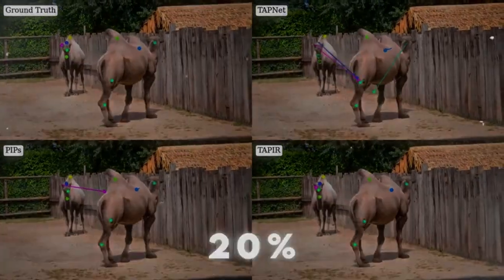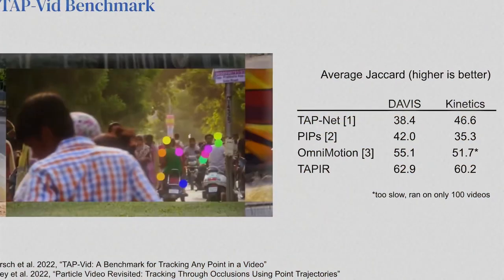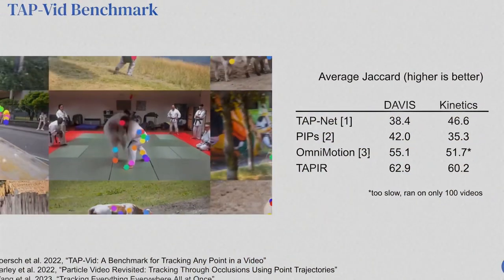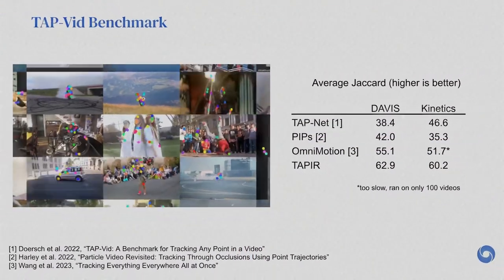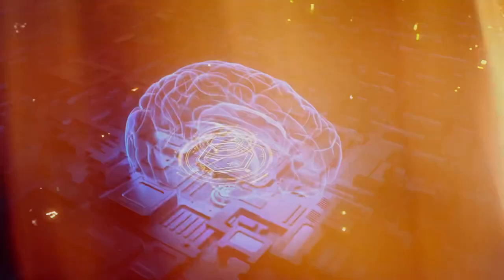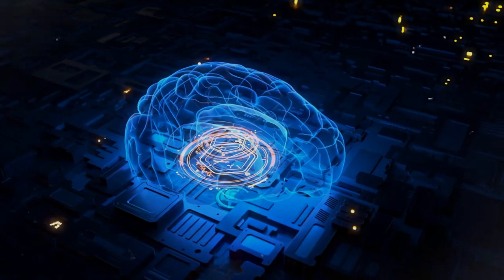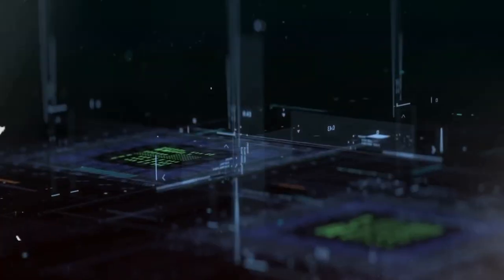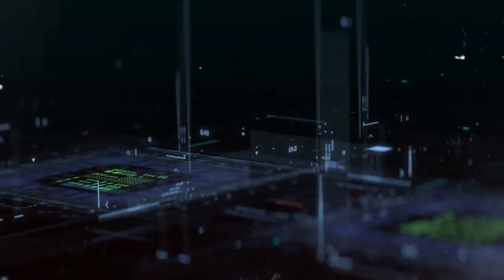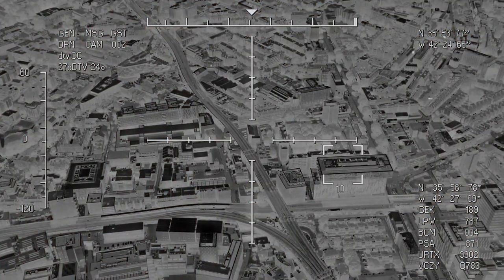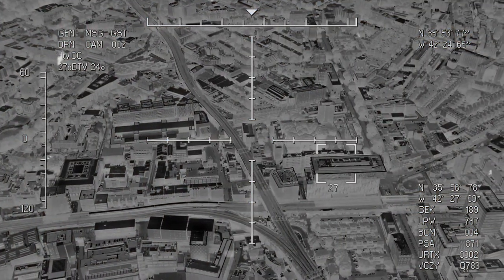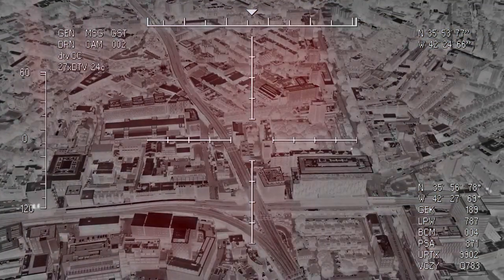TAPR showed an impressive 20% improvement in a metric called Average Jaccard, which measures how well it tracks objects in videos. The model is super efficient too — it can process lots of frames in a video all at once, making it really fast. It can even keep up with real-time videos, so it can track things as they happen.